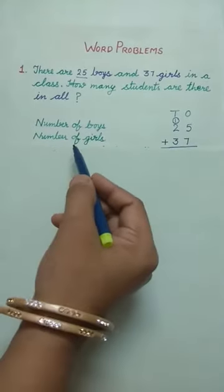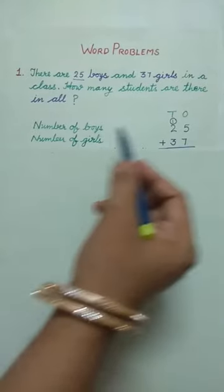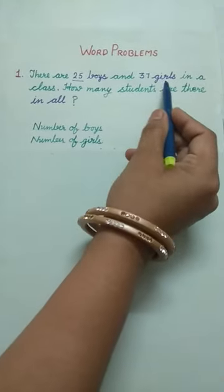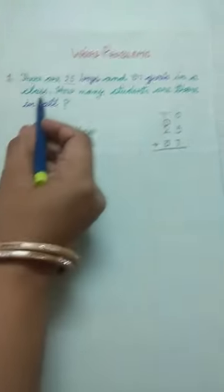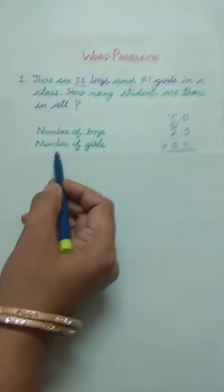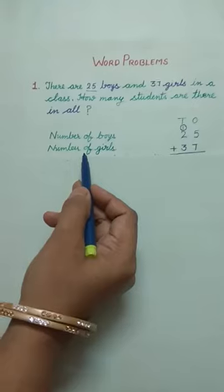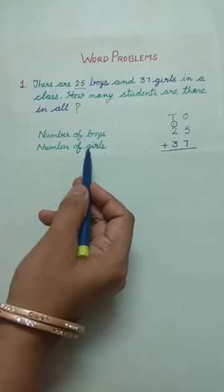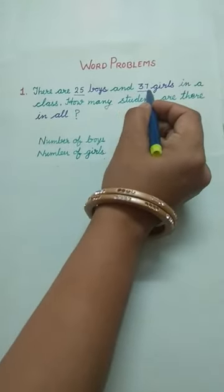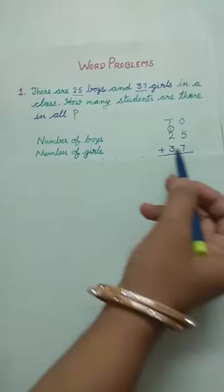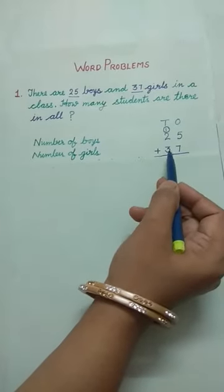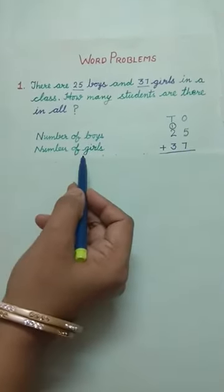Now, second statement we make with the help of second line. 37 girls in a class. Here again we will start our statement with the word 'number of.' Number of girls. How many? 37. So here we have written 37 in front of this statement.